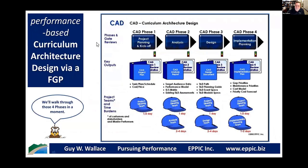For curriculum architecture design I have four phases. We'll talk about the key outputs from each phase and the teams. How long does this take? The last CAD project I did, at the end of 2018, took three months. The project before that took three weeks — for the same client, a healthcare group in Atlanta. It all depends on how well you can organize people to come together. I have analysis teams, design teams, and project steering teams of the client and key stakeholders, who are usually the hardest to get together to review and approve what's been produced.